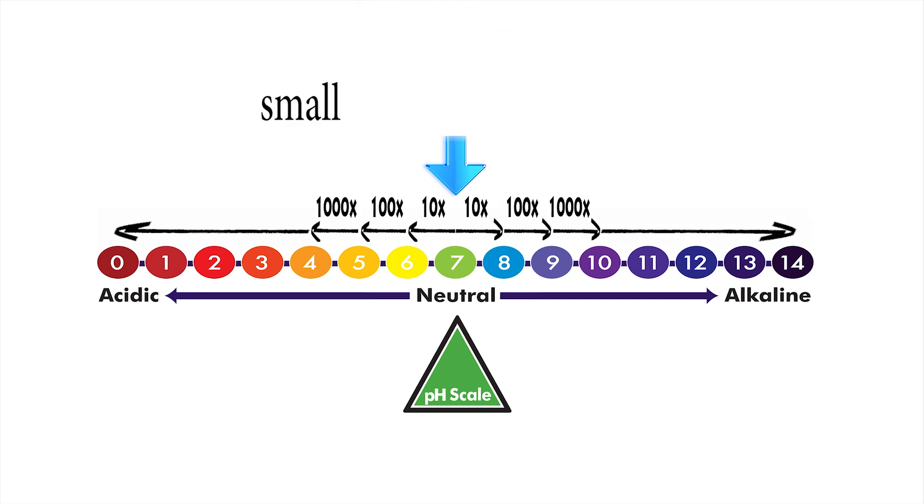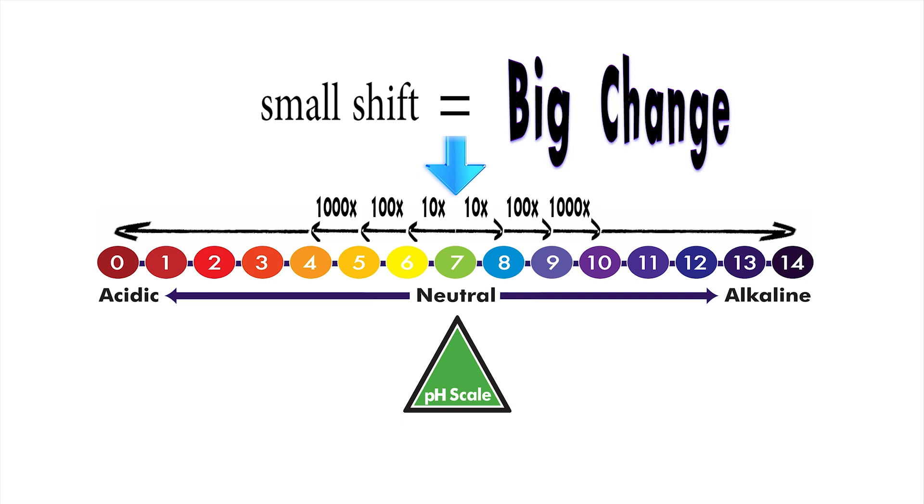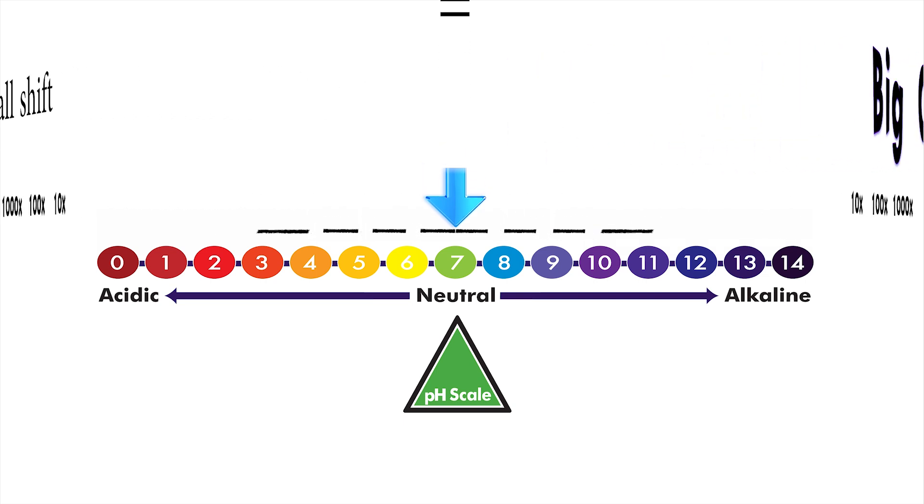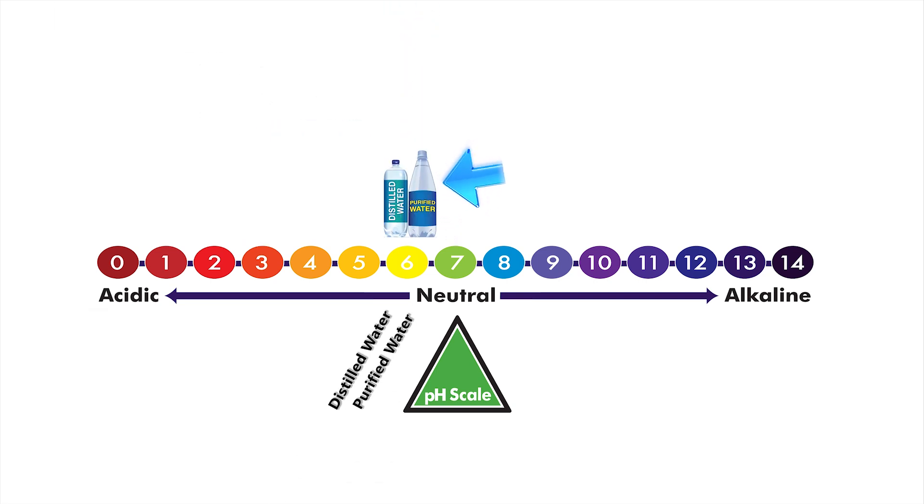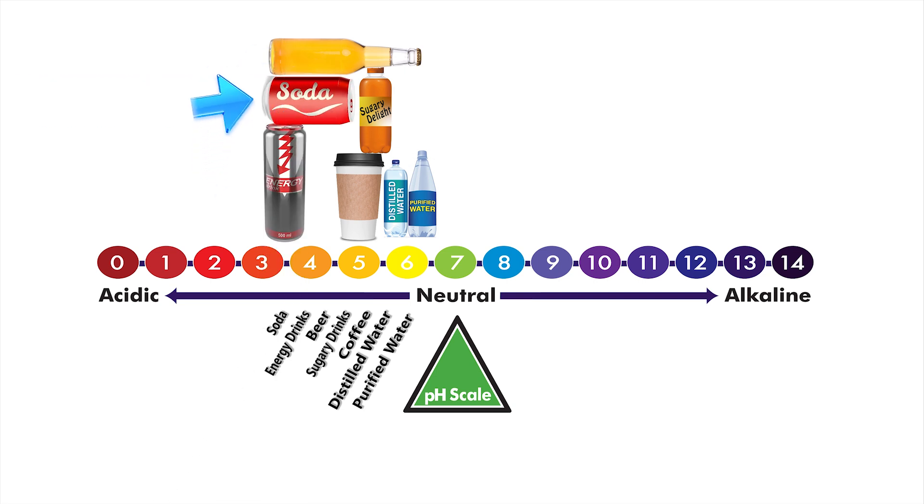The main point is that a small shift means a big change. To give you an idea where things rank, most beverages are acidic and fall between 3 and 6. For example, purified and distilled water are around a 6, while coffee and sugary artificial drinks are around a 5. Alcohol is around a 4, while energy drinks and soda are around a 3, next to stomach acid at a pH of 2.5. Anything lower than this in large quantities can be lethal.